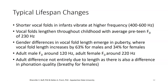Phonation changes in fairly typical ways across the lifespan. Infants have shorter, smaller vocal folds and so they vibrate at a higher frequency. Vocal folds lengthen throughout childhood, giving an average pre-teen fundamental frequency around 230 Hz. Gender differences in vocal fold length emerge in puberty: vocal fold length increases by 63% for males but only 34% for females. This results in an adult male fundamental frequency averaging around 120 Hz, while an adult female fundamental frequency remains close to the pre-teen level at 220 Hz.